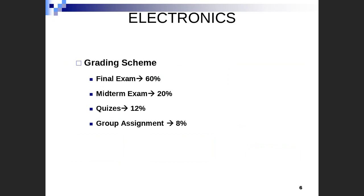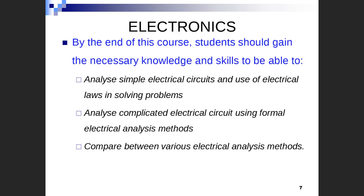Concerning the grading criteria of the electronics course: the final exam is out of 60 grades, the midterm exam is out of 20, and we will have two quizzes out of 12 grades total — quiz one before the midterm and quiz two after the midterm. The remaining eight grades will be for group assignments held during the section. Note that this grading criteria may change from term to term, but this is what we use in this term.